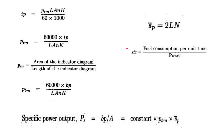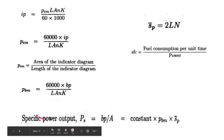Specific fuel consumption SFC is fuel consumption per unit time divided by power. The fuel consumption comes from the carburetor flow rate. Dividing by indicated power gives indicated specific fuel consumption (ISFC); dividing by brake power gives brake specific fuel consumption (BSFC). Specific power output is also defined with respect to indicated power and brake power — generally brake power is used — as brake power divided by the piston area, which can be manipulated to a constant times BMEP times mean piston speed, though the basic formula is primarily used.